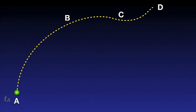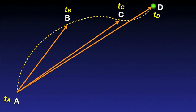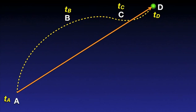Let's have a look at the following animation. The green ball moves from A to D along the path marked with a dashed line. B and C are two intermediary points. TA, TB, TC, and TD indicate the moments in time when the ball is at point A, B, C, and D respectively.